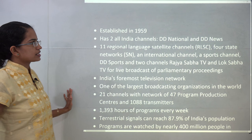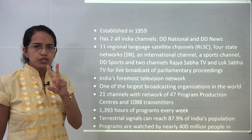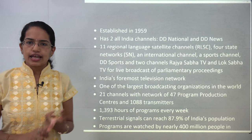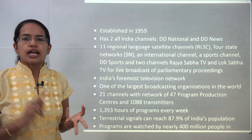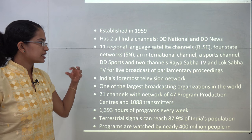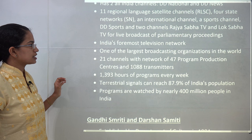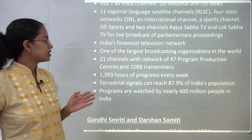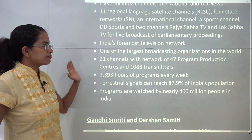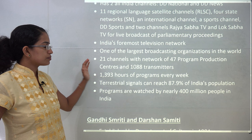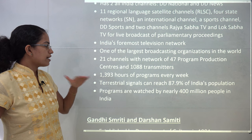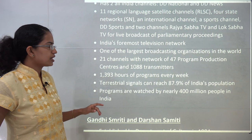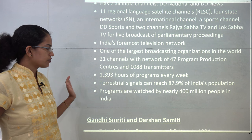Doordarshan was established in 1959, originally with two channels: DD National and DD News. Later it added an international channel, DD Sports, Rajya Sabha TV, Lok Sabha TV, various state networks, and 11 regional satellite centers. It is one of the largest broadcasting organizations in the world, with 21 channels, 47 program production centers, and 1,400 hours of programs every week, covering around 88% of India's population.